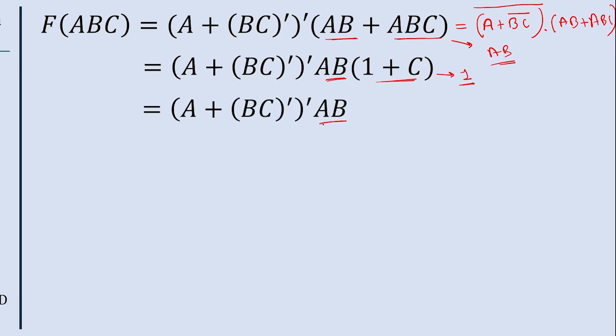So in the next step we will get AB as a result. Now here this term is like this. So first what we will do? First we will consider this BC bar as D.